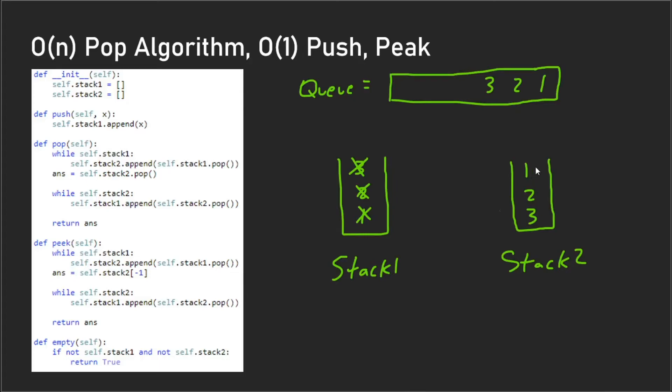So let's say you pop off this one here, and then afterwards we need to restore the initial state of stack one. What we would do is pop all the elements of stack two and add it back into stack one, so stack two is empty.